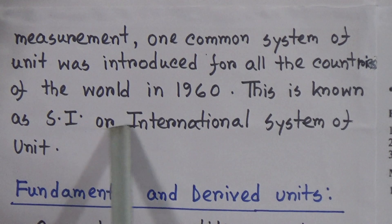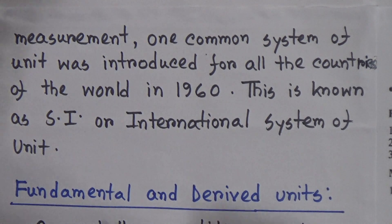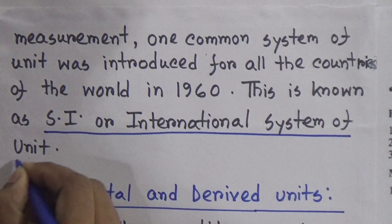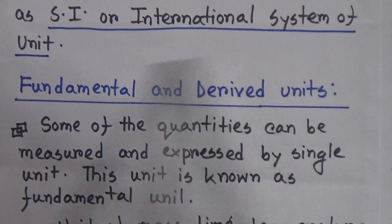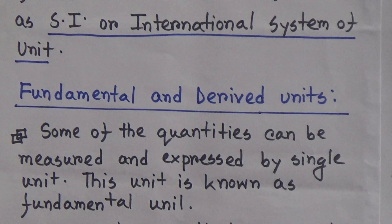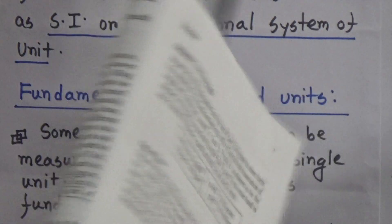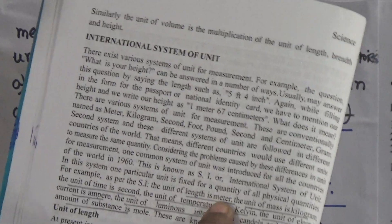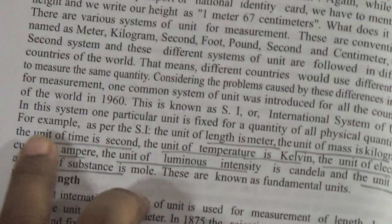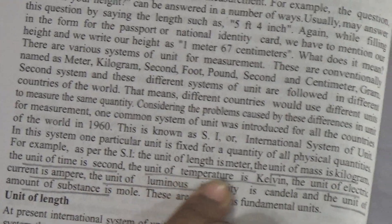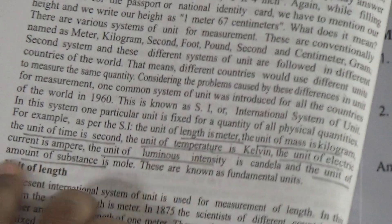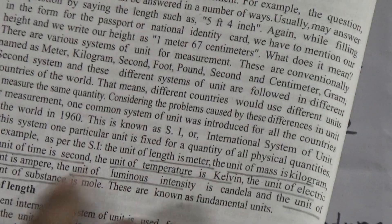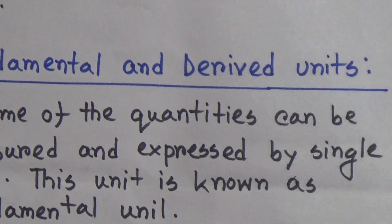This is known as SI or International System of Unit. In your book, 7 units are given on page number 6. The unit of length is metre, unit of mass is kilogram, unit of time is second, unit of temperature is Kelvin, unit of electric current is ampere, unit of luminous intensity is candela, and the unit of amount of substance is mole. These 7 units are considered as the fundamental units.